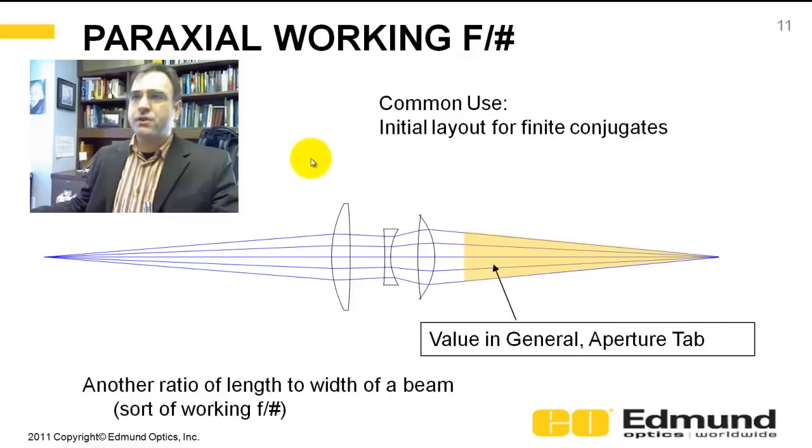And there's also the paraxial working F number. And you can specify the paraxial working F number in the general tab. Again, it's a ratio of length, length to width. And this is used when you've got a finite conjugate.